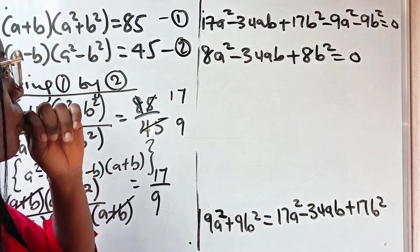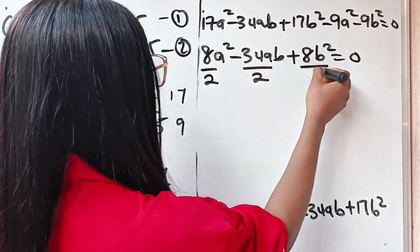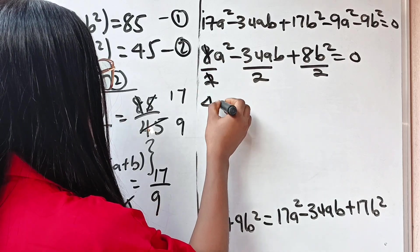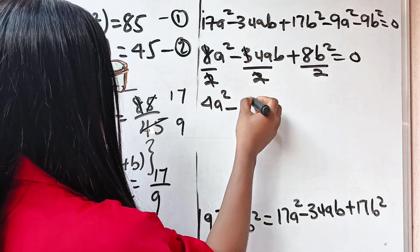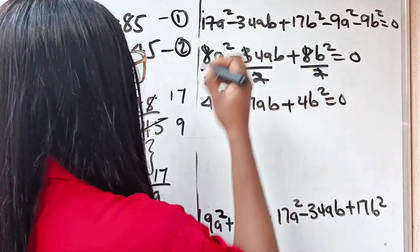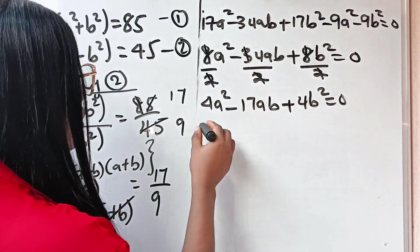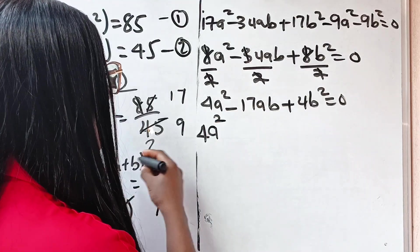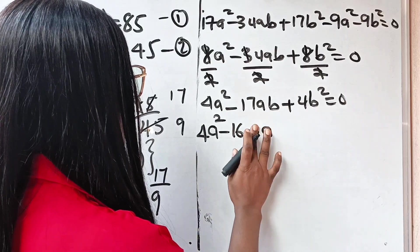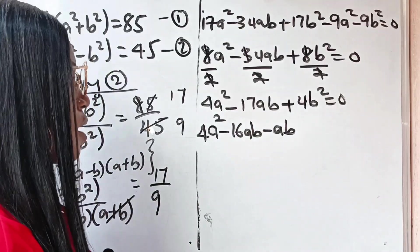We can divide through by two to reduce the expression. So dividing everything by two we have 4a squared minus 17ab plus 4b squared is equal to zero. Let's go ahead and factorize. We split minus 17ab as minus 16ab minus ab, since these two still give us minus 17ab.